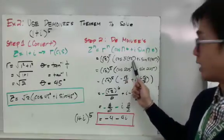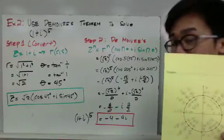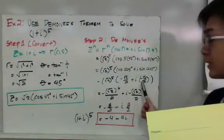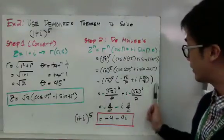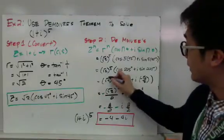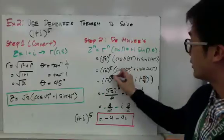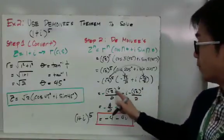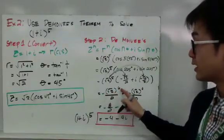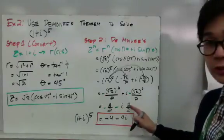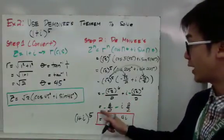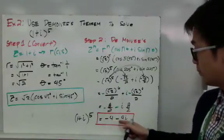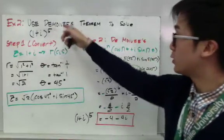Multiplying 5 and 45 gives 225 degrees. Using the unit circle, cosine of 225 degrees is negative square root of 2 over 2, and sine of 225 degrees is also negative square root of 2 over 2. Distributing square root of 2 raised to the 5th power to each term gives square root of 2 to the 6th over 2, and negative square root of 2 to the 6th over 2. Simplifying square root of 2 to the 6th gives 8, so we have 8 over 2 for each term. Therefore, 1 plus i raised to the 5th power equals negative 4 minus 4i. This is how we use De Moivre's theorem.